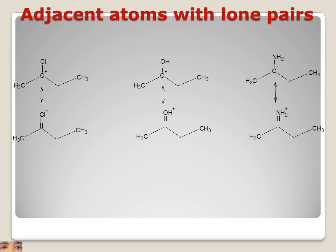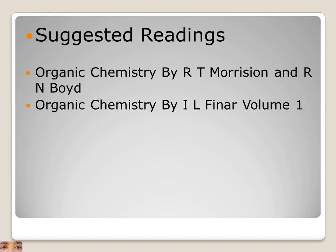The next factor is adjacent atoms with lone pairs. When we have a carbon containing a positive charge attached to an electronegative atom that has a lone pair — such as chlorine, oxygen, or nitrogen — these lone pairs tend to form a bond. Although a positive charge is generated on the electronegative atom, which is destabilizing, the octet of the carbon is now complete. This is the third factor which leads to stabilization.